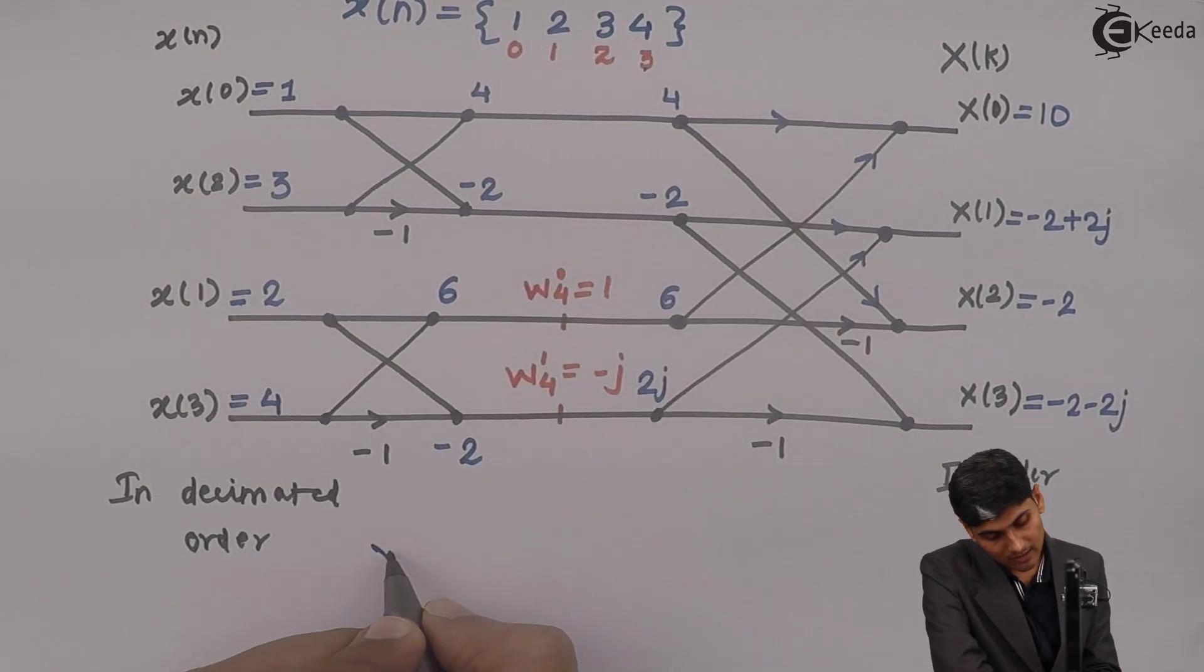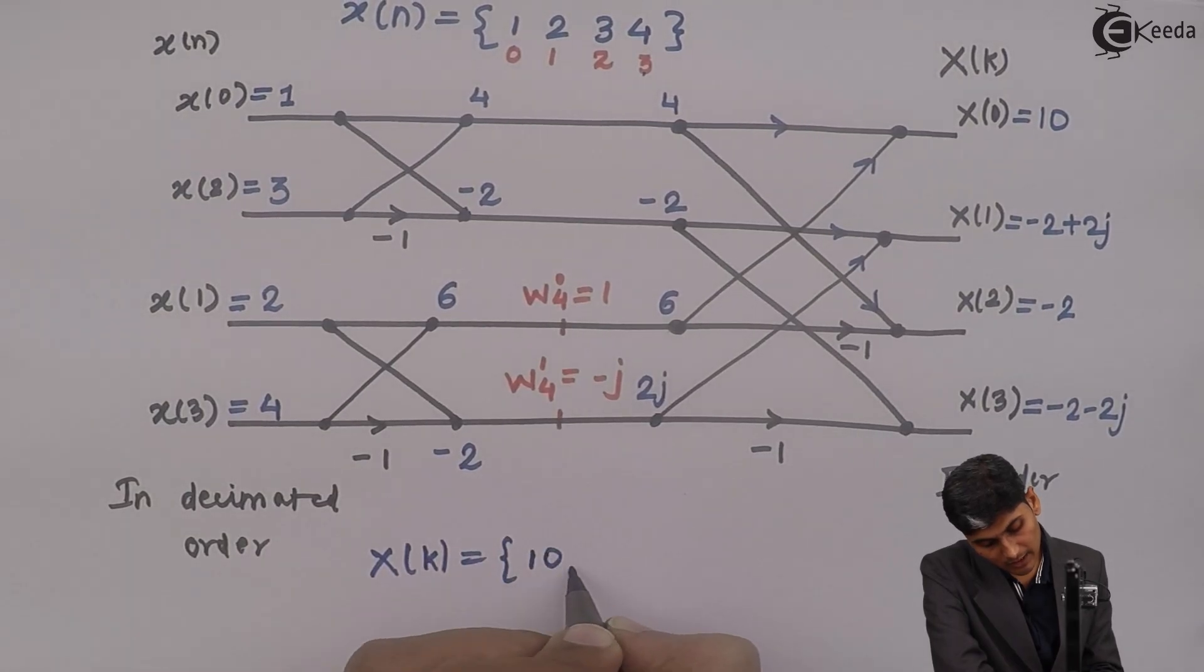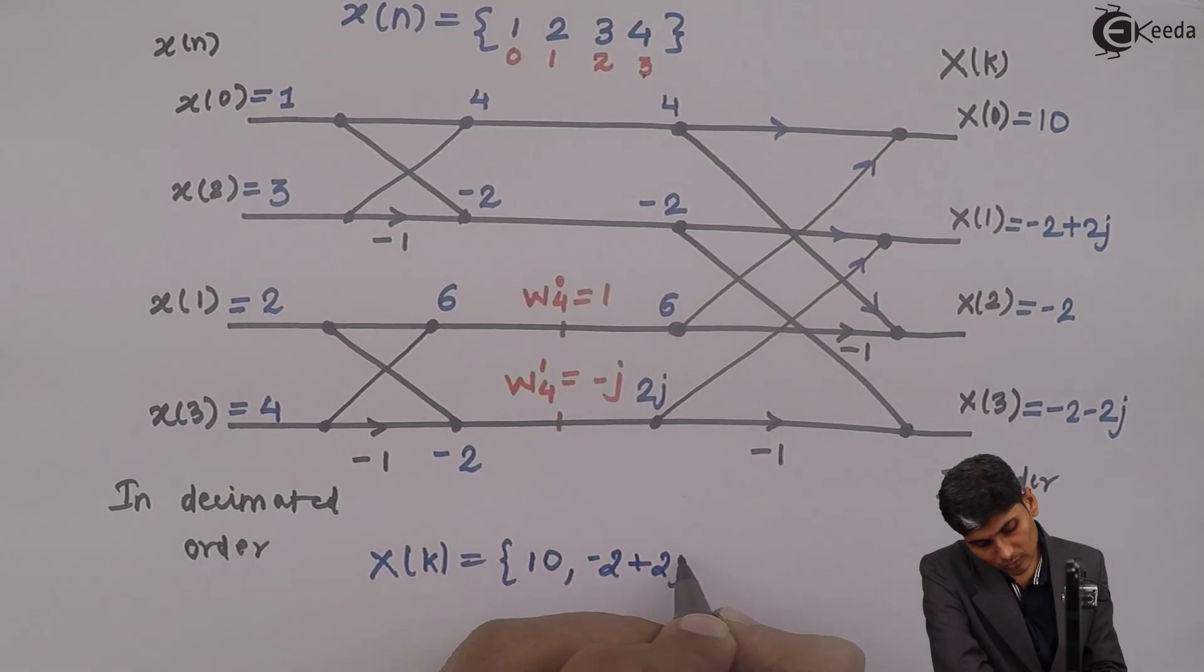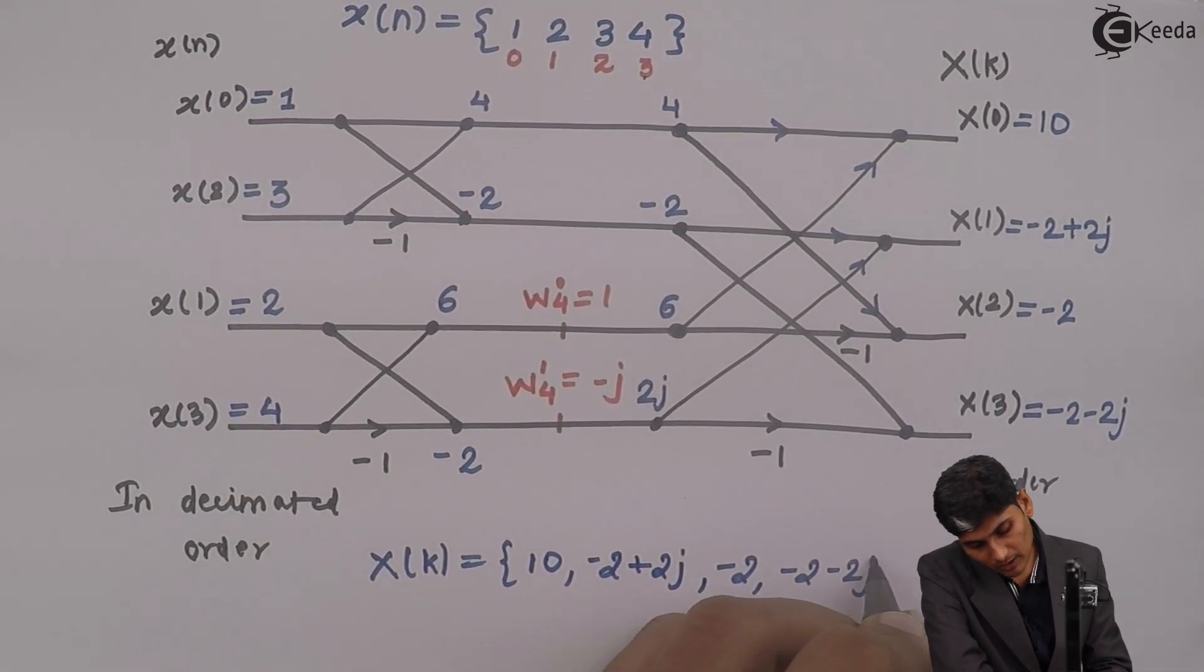So the answer of this factor that is x of k is 10, minus 2 plus 2j, minus 2, minus 2 minus 2j.